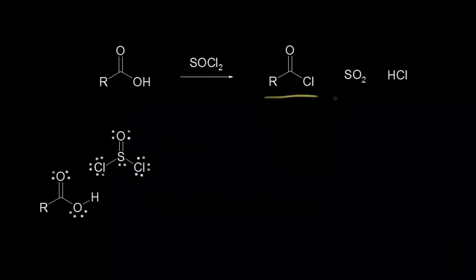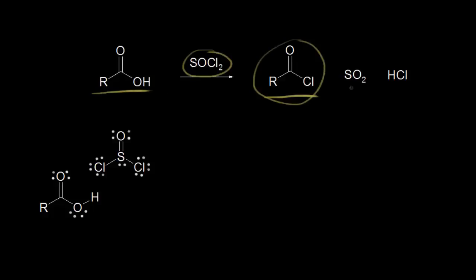Here's the general structure for an acyl chloride, also called an acid chloride. It's a carboxylic acid derivative, so we can form them from carboxylic acids. If we start with a carboxylic acid and add thionyl chloride, we can form our acyl chloride, and we would also form sulfur dioxide and HCl in this reaction.